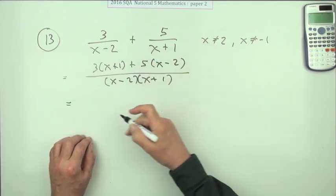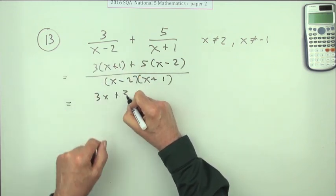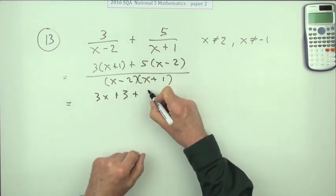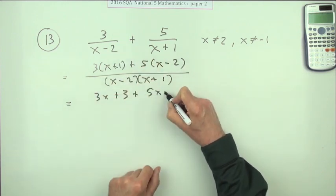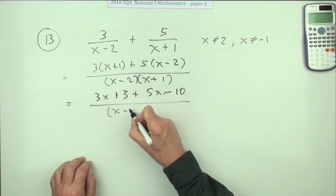Now it did say simplify, that means don't just leave it like that, get that tidied up. So 3 times that bracket is 3 times the x and 3 times the 1. 5 times that bracket is 5 times the x minus 5 times the 2 is 10. But leave this alone just in case.